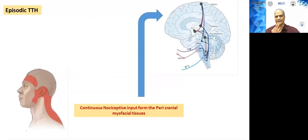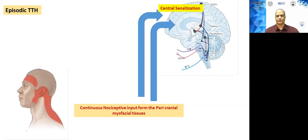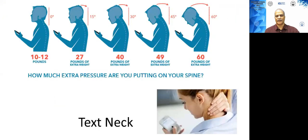Before we understand how to treat tension type headache, we should understand the pathophysiology. Initially, the patient will have episodic tension type headache, where there is continuous nociceptive input from the pericranial myofascial tissues going into the pain-sensitive areas of the brain. Common triggers include using your cell phone with the neck in a flexed posture — as you can see from this diagram, each degree of flexion puts more pressure on the cervical spine and can act as a constant trigger.